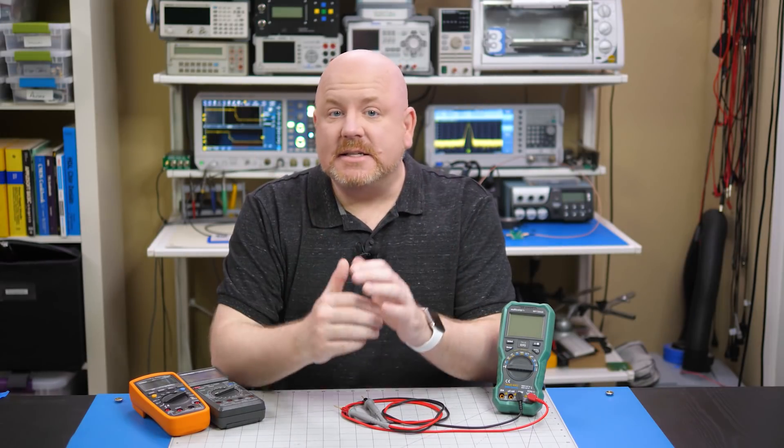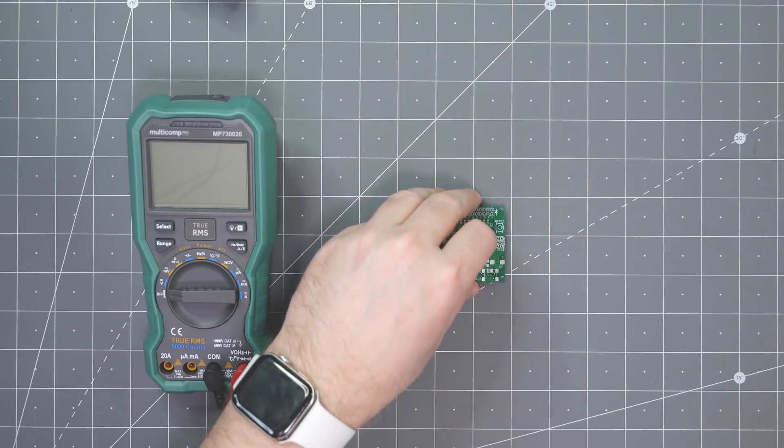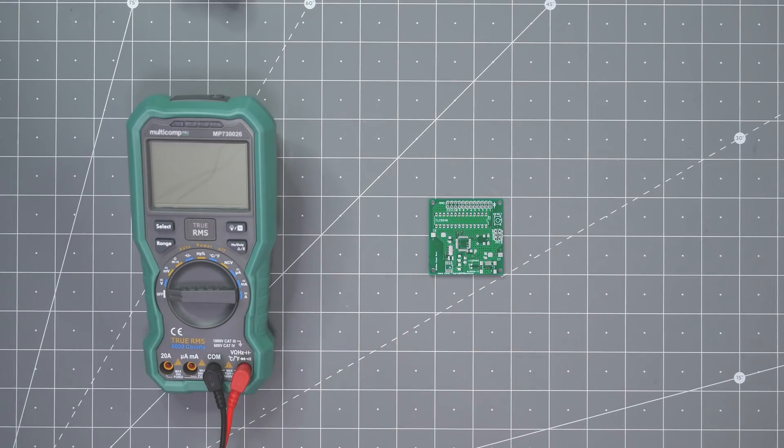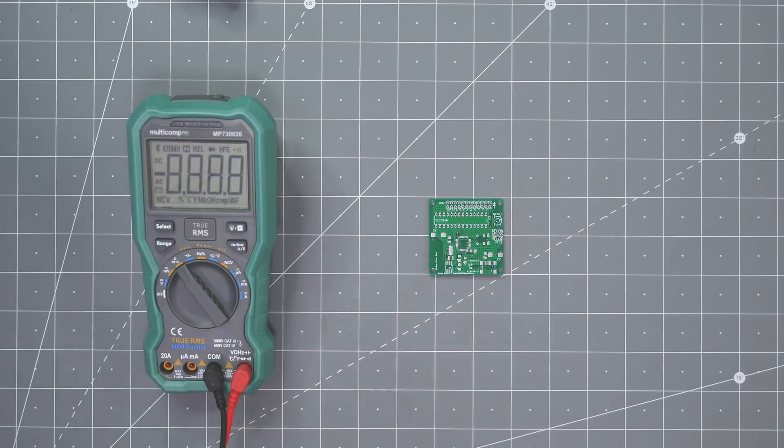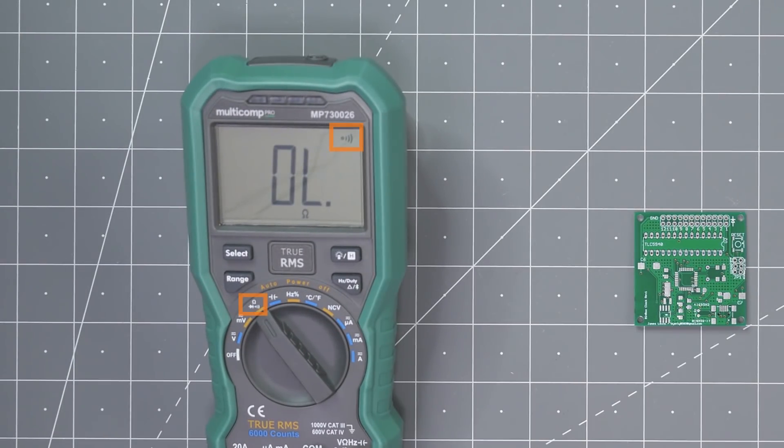One of the first things I do when I get back a new PCB from the fab is check the power rails for shorts, which is where the multimeter's continuity mode comes in. Some meters have a place on the dial for it and some you go into resistance mode and then press a button to select it. The icon is usually some kind of sound looking thing.